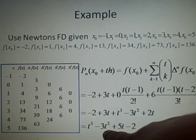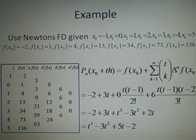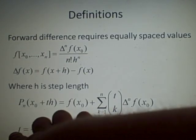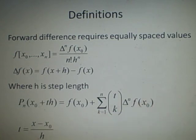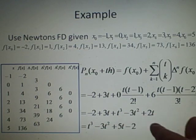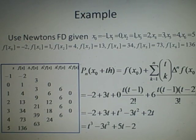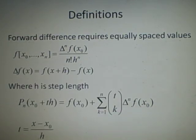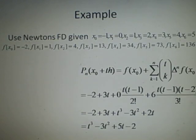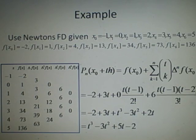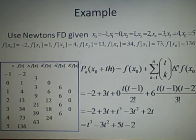After simplification the polynomial becomes t cubed minus 3t squared plus 5t minus 2. If you want a specific value, substitute t = (x minus x0)/h. For example, to find the value at x=3: h=1 so t = 3 minus x0 = 3 minus (-1) = 4. Substituting t=4 into the polynomial should give the correct function value.